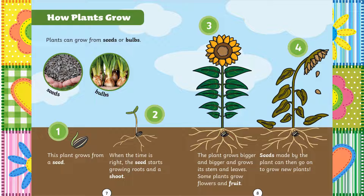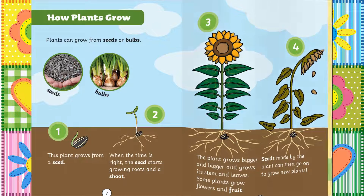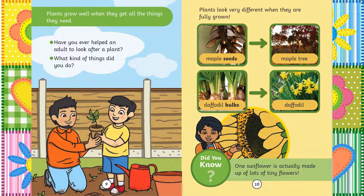3. The plant grows bigger and bigger and grows its stem and leaves. Some plants grow flowers and fruit. 4. Seeds made by the plant can then go on to grow new plants. Plants grow well when they get all the things they need. Have you ever helped an adult to look after a plant? What kind of things did you do?